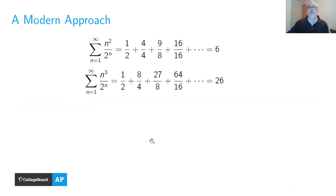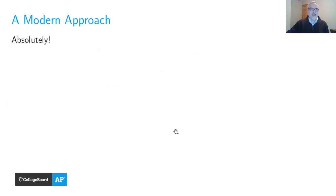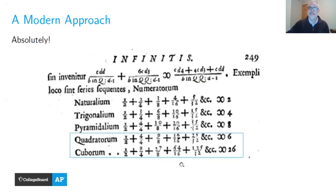Here's a summary of those last two results: the series with squares in the numerators equals exactly 6, and the series with cubes in the numerators equals exactly 26. And if you ask whether Bernoulli knew these in 1689 — absolutely. Looking at the same table again, the bottom two rows show 6 and 26, with squares in the numerators of one row and cubes in the numerators of the other. These are really cool exact results.